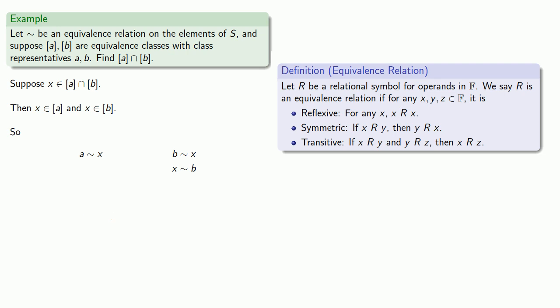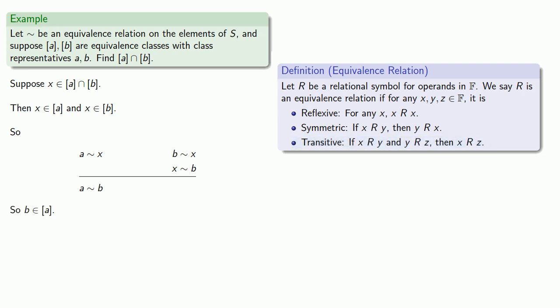Then, because we have an equivalence relation, we have transitivity. So A squiggle B. And since A squiggle B, then B is in the equivalence class of A.